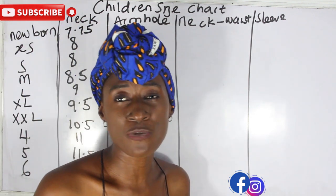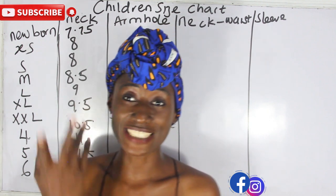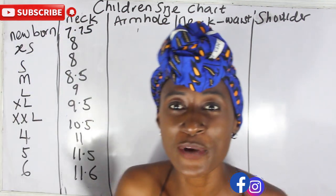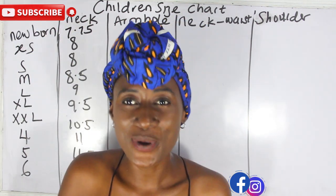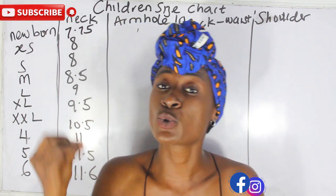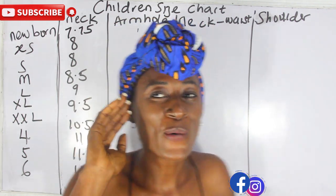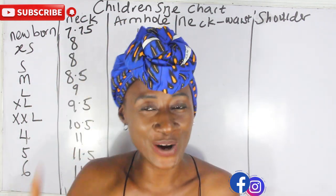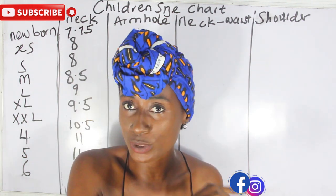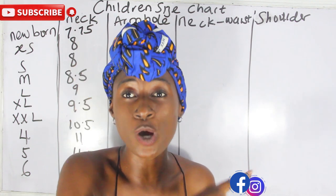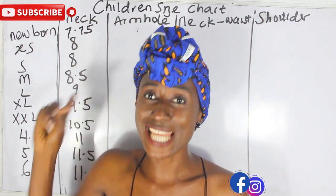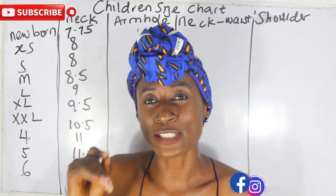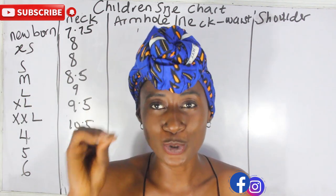This is the neck measurement. Of course, by the time you want to cut it, you will go ahead and divide the measurement by two because your fabric is folded. Now, I know you might want to say that 8 inches is too much for a small child — please just hold on. When we get to the shoulder part I will explain it better.